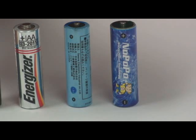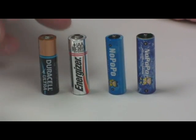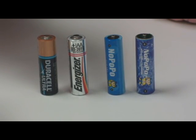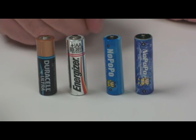As we look, they are all double-A batteries. They all produce 1.5 volts of current. The two on the left produce 2400 milliamps, and the two on the right, the NoPoPo batteries, produce 600 milliamps of current.